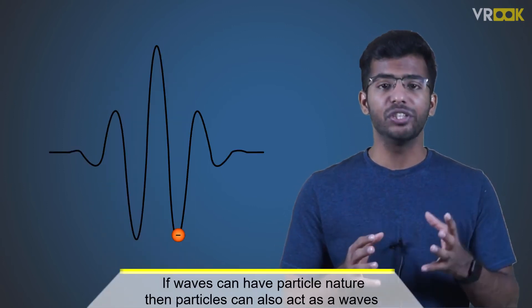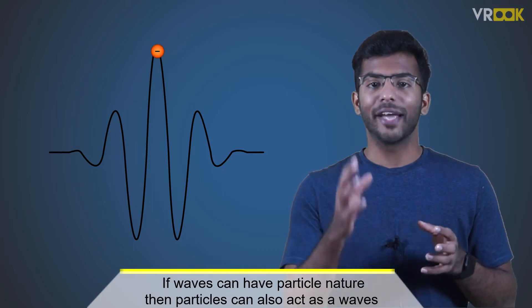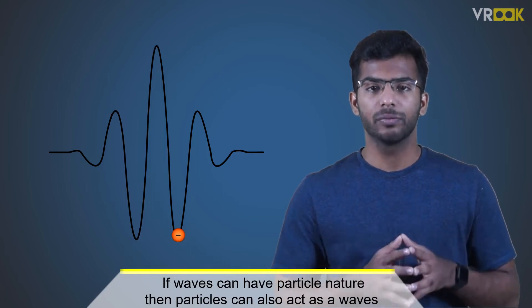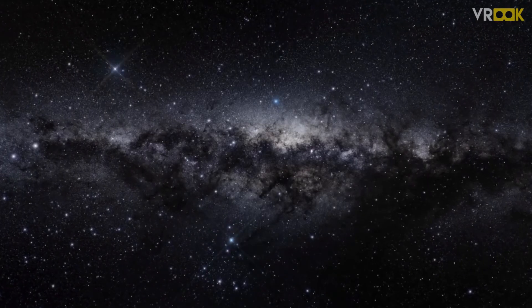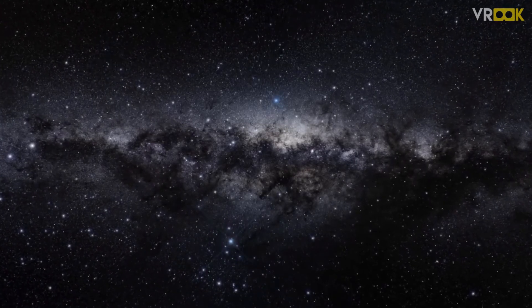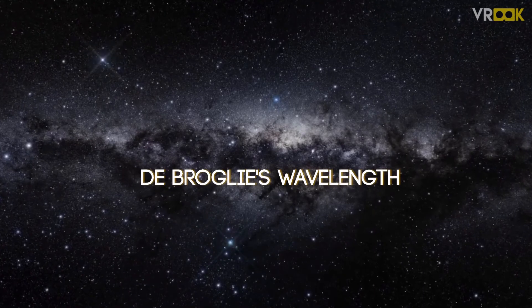His argument was simple. If waves can have particle nature, then particles can also act as waves. So every matter or particle we see has wave-like properties and has a wavelength called as de Broglie wavelength.